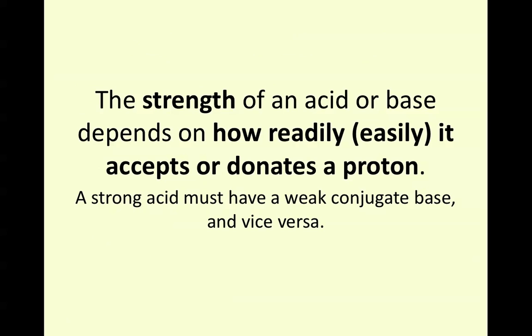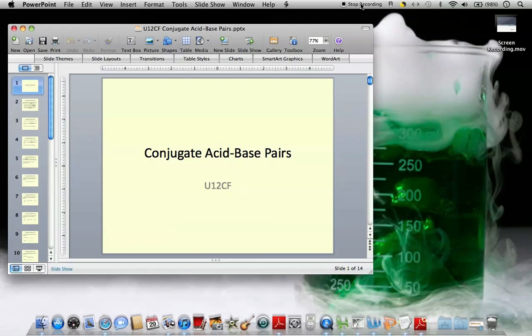Alright. And lastly, remember the strength of an acid or a base depends on how readily or easily it accepts or donates a proton. If we have a strong acid, this means it has a weak conjugate base. Or if we were to have a weak base, it would have a strong conjugate acid. And so on. Alright. So that's it for that concept. We're going to do a lot of practicing with it so that you get comfortable assigning conjugate acid-base pairs.